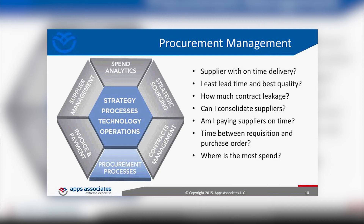How can you consolidate suppliers? Are people across the company or globally ordering the same laptop or part from various vendors, causing price fluctuation? Are suppliers being paid on time? What is the time lag between a purchase request and when the order is placed — because that can have serious implications. And where is the most spend happening in the organization? These are very common procurement questions that any department faces.